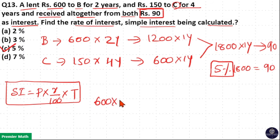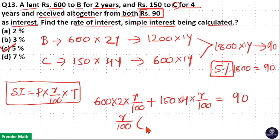Rs. 600 principal for 2 years at R percentage rate plus Rs. 150 principal for 4 years at R percentage rate gives you interest 90 rupees. Now if I take R by 100 as common, then 600 into 2 plus 150 into 4 is 1800 rupees, which is equal to 90.